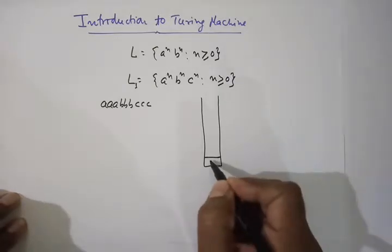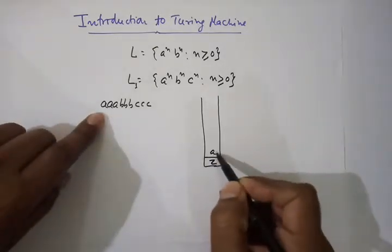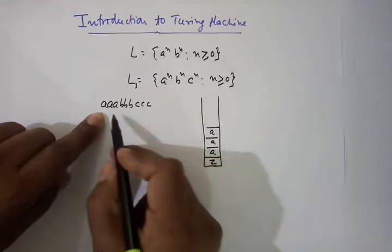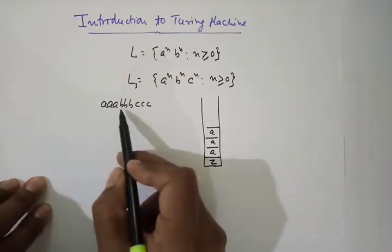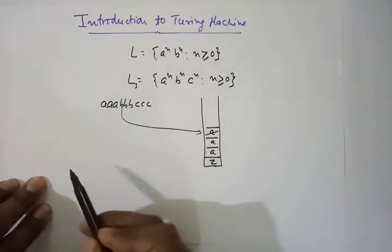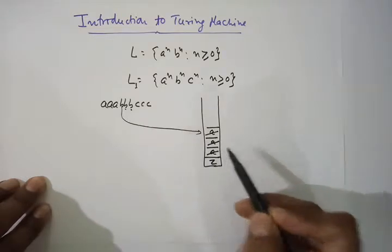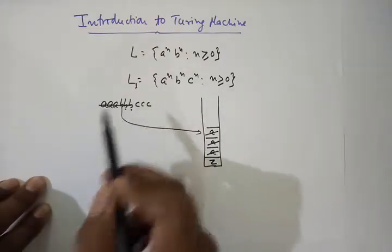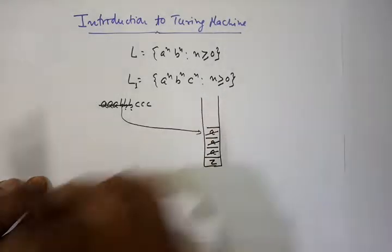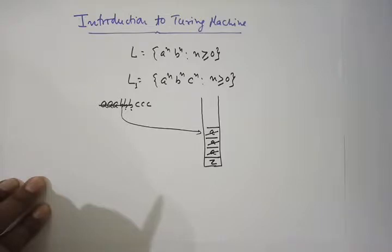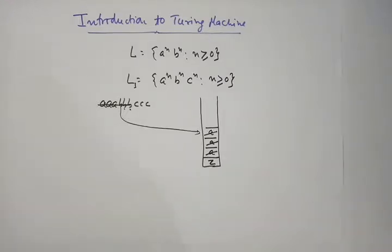Suppose we push all the A's onto the stack. Now the moment the first B is encountered, we can pop the first A. Second B is also popped, third B is also popped against the A's. Now A's and B's are matched — they are equal, and the stack is empty. But what about C? The stack is now empty, so we cannot remember how many A's and B's were there so that C can be matched against them. That's the reason the language a^n b^n c^n cannot be accepted by pushdown automata.